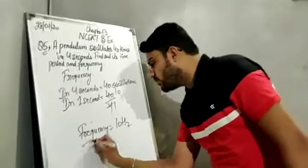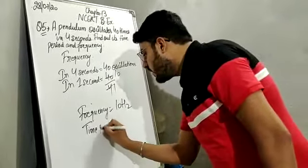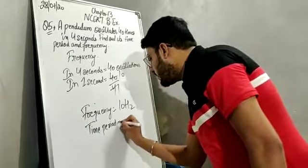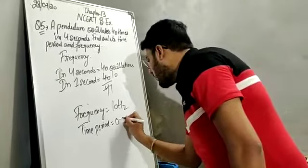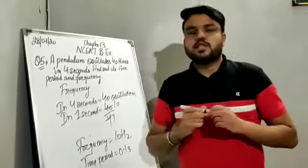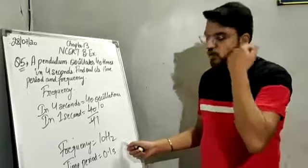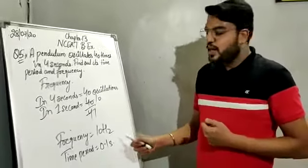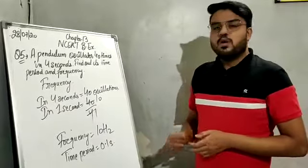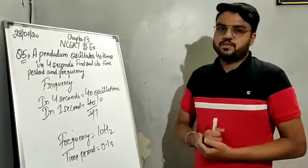The time period was 0.1 second. So the frequency of the pendulum is 10 hertz and the time period of the pendulum is 0.1 second.